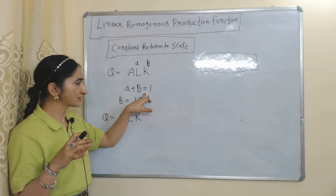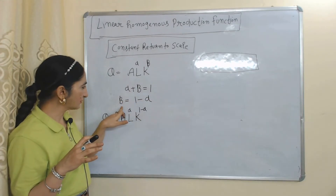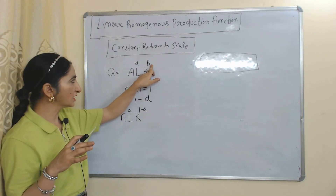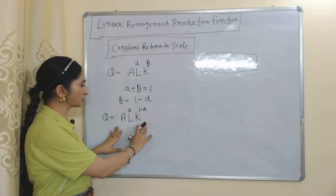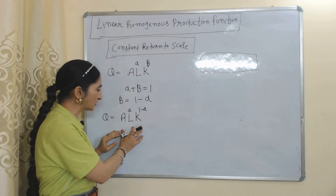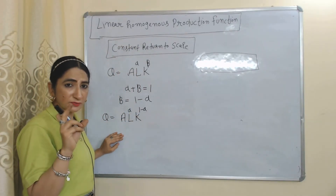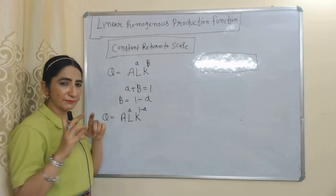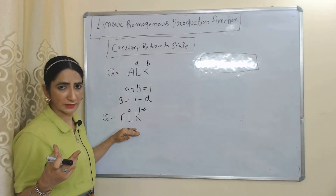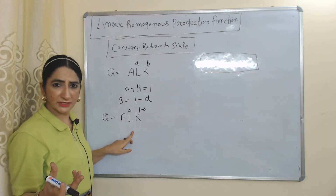When alpha plus beta equals 1, we can calculate beta as: β = 1 − α. So in the equation, in place of beta we write 1 − α. Our equation becomes Q = A·L^α·K^(1−α). This equation represents the Cobb-Douglas production function because it is a linear homogeneous production function based on constant return to scale. Some books show the first form of the equation and some books show this form.